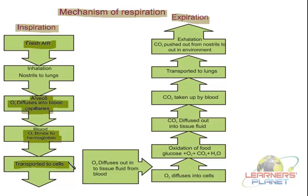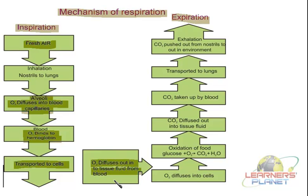As the blood reaches a particular target site in a tissue or near the cells, the oxygen present inside the blood vessels tends to diffuse out into the tissue fluid. From the tissue fluid present in the spaces between cells, the oxygen then moves inside the cell. After diffusing inside the cell, it participates in the process of oxidation, during which the oxidation of food takes place.